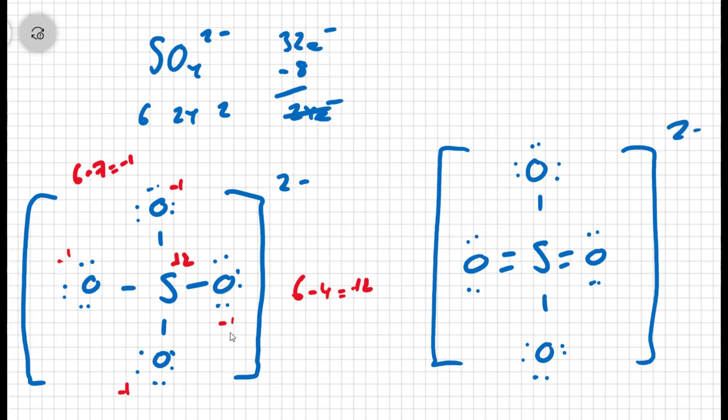Double bonded oxygen has a formal charge of zero, six minus six. The single bonded oxygens have negative one formal charges. And now sulfur starts with six, and now has six bonds around it, it has a formal charge of zero. That's much better.